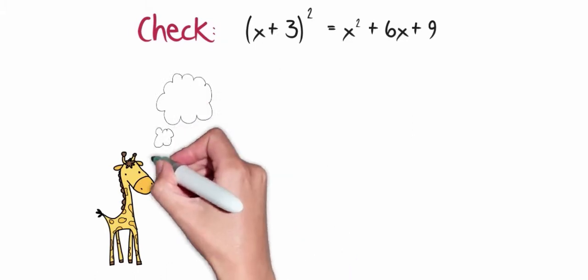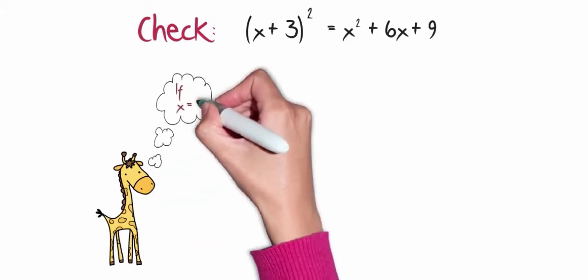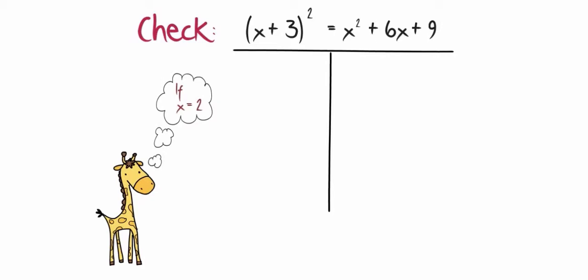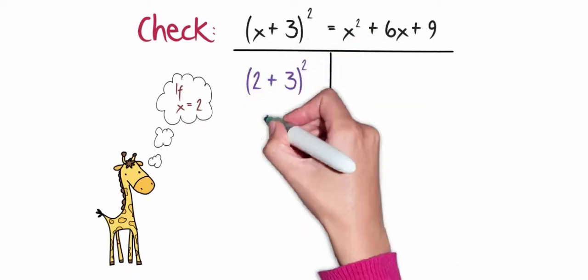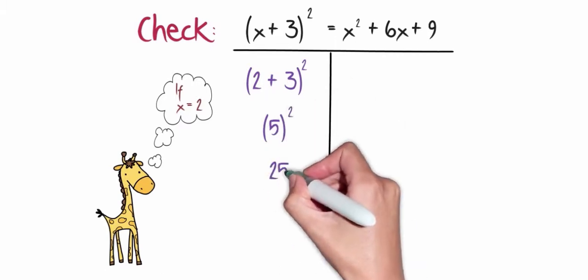I'm going to pick the value 2 to represent x because I like having easy numbers to work with. I'll substitute 2 everywhere there's an x in x plus 3 quantity squared. So that would be 2 plus 3 quantity squared or 5 squared, which is 25.